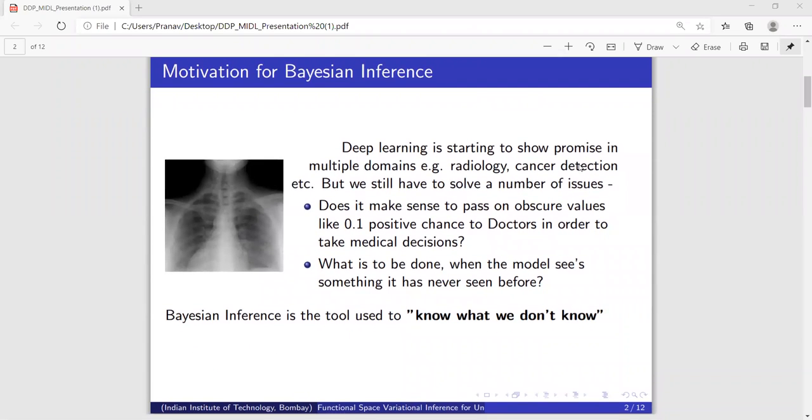So first and foremost, what is the motivation? Although AI and ML have taken over the field of cancer research, we are not able to deploy them to the real world because of issues of safety and interpretability. Bayesian Inference provides us with the tool to deal with it.